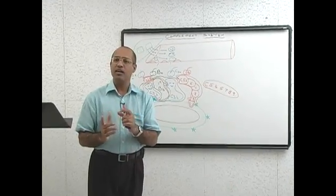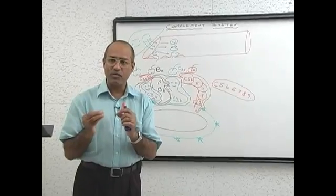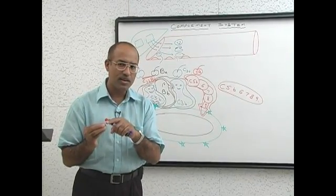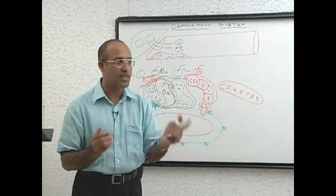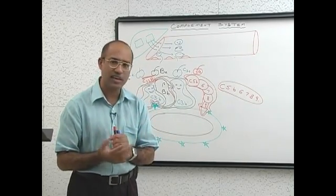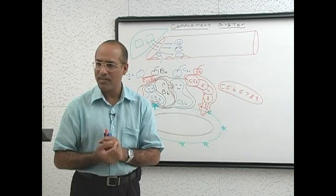First line of defense when bacteria come in your body is alternate pathway. And look, when bacteria enter which will be first activated? Alternate pathway. And once antibodies are produced, then which pathway can be activated? Classical pathway. Are you clear?